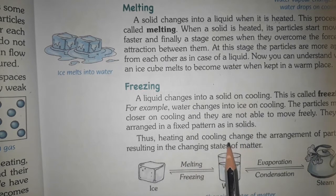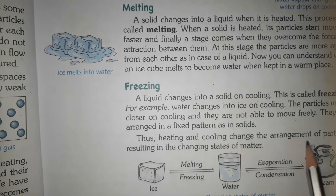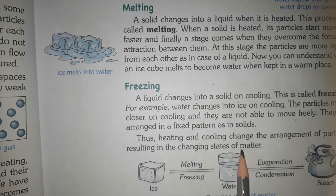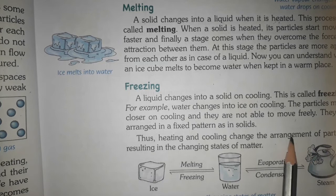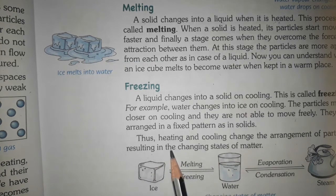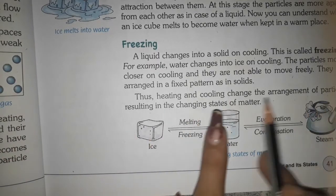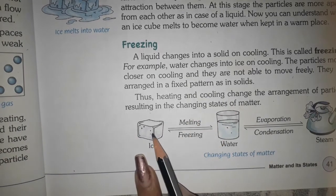Thus, heating and cooling change the arrangement of particles, resulting in the changing state of matter. Particles की arrangement की वजह से ही solid, liquid, और gas आपस में अलग लगते हैं। Particles की arrangement बदली तो matter की state भी change हो जाती है। अब तक जो पढ़ा उसे एक diagram के form में represent किया जा सकता है।